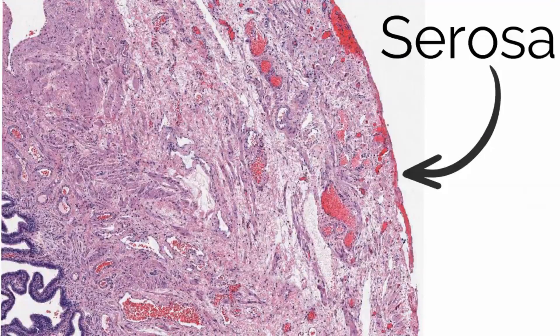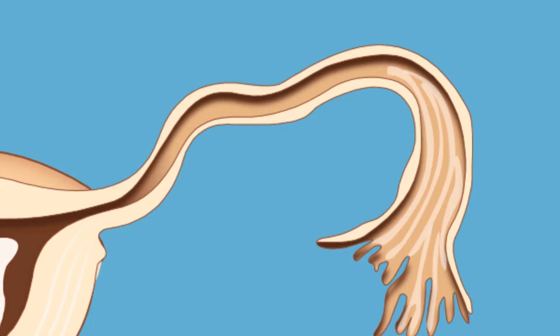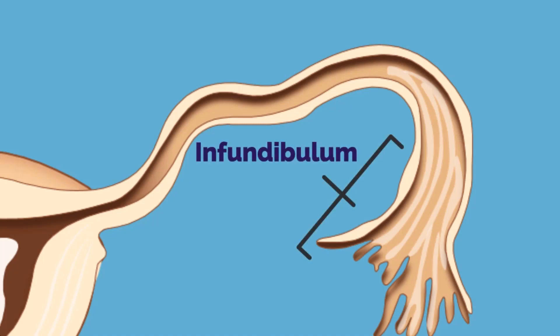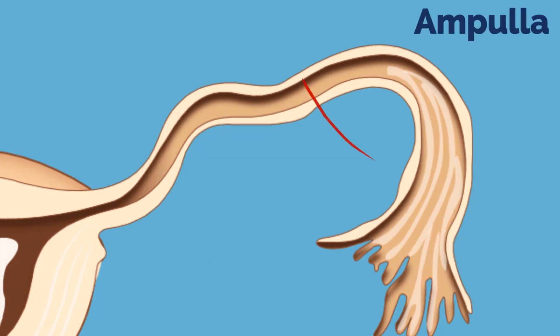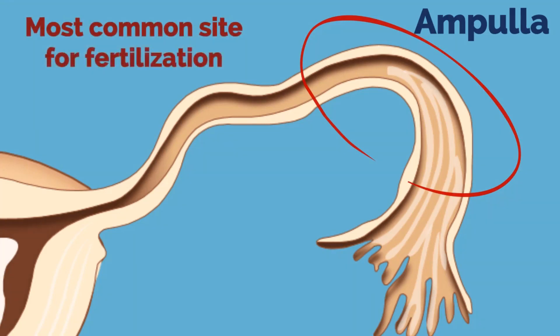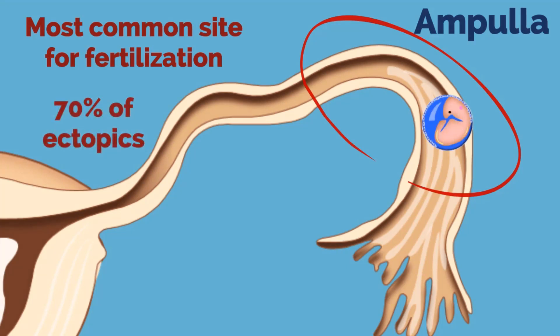The serosa is highly vascular and is continuous with the visceral peritoneum. There are several segments to the tube which help with its overall function. The most distal segment is the infundibulum, which contains the fimbriae — finger-like extensions of mucosal folds that project toward the ovary to help trap the ovum after ovulation. Next is the ampulla, a widened segment near the distal end. It is the most common site of fertilization and also the most likely location for ectopic pregnancy, accounting for 70% of ectopic pregnancies.